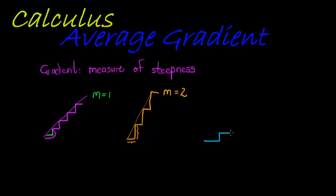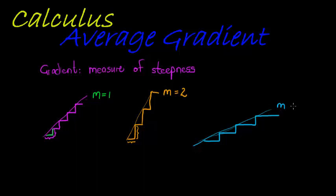And now if I were to have steps where the width is double the height — in other words you take two steps forward before taking one step up — and we put a ladder line on here, you would notice this is a less steep slope than both previous examples. This would be a slope of one half.